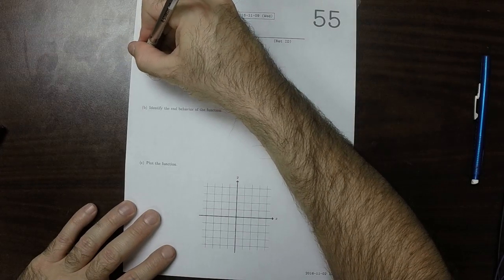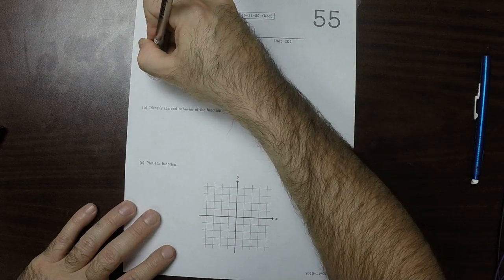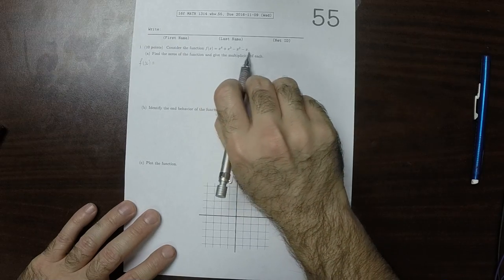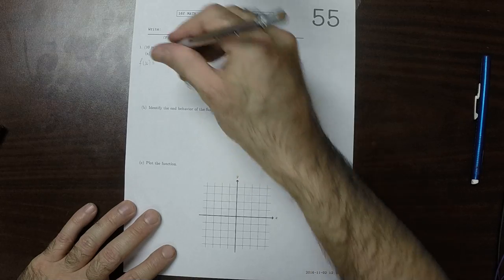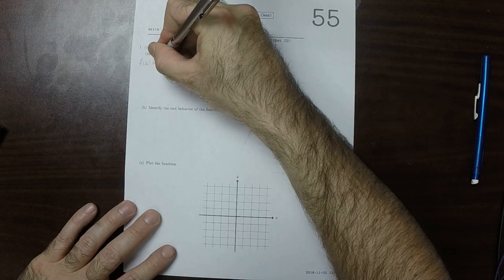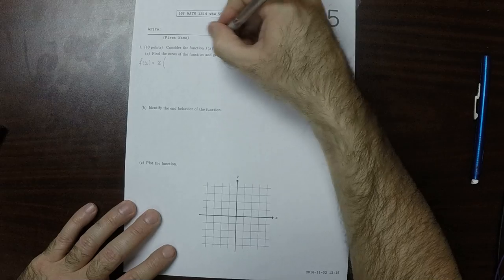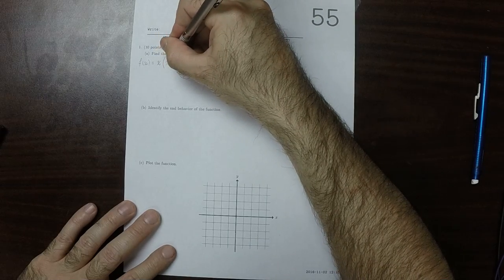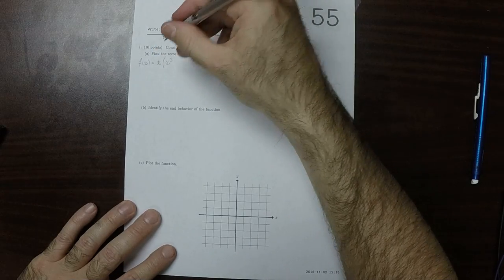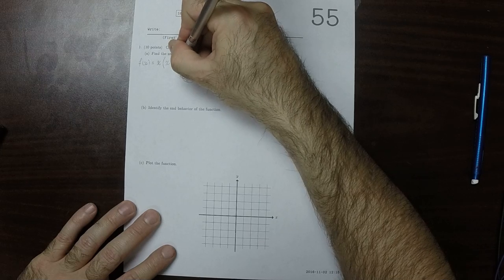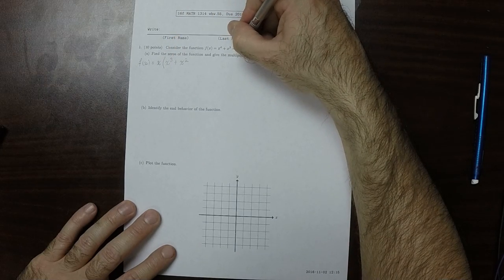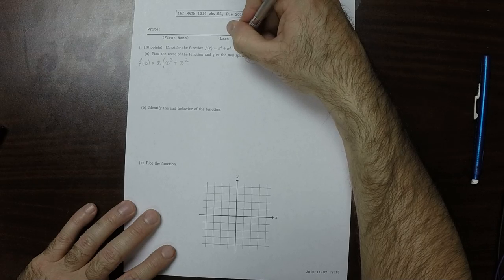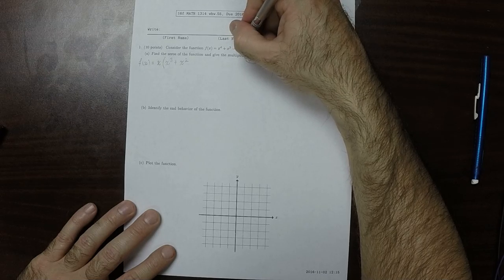In the first place, you can see that x is a common factor of all of those terms. So I'll factor out x, and then get x cubed plus x squared minus x squared—sorry, minus x minus 1.